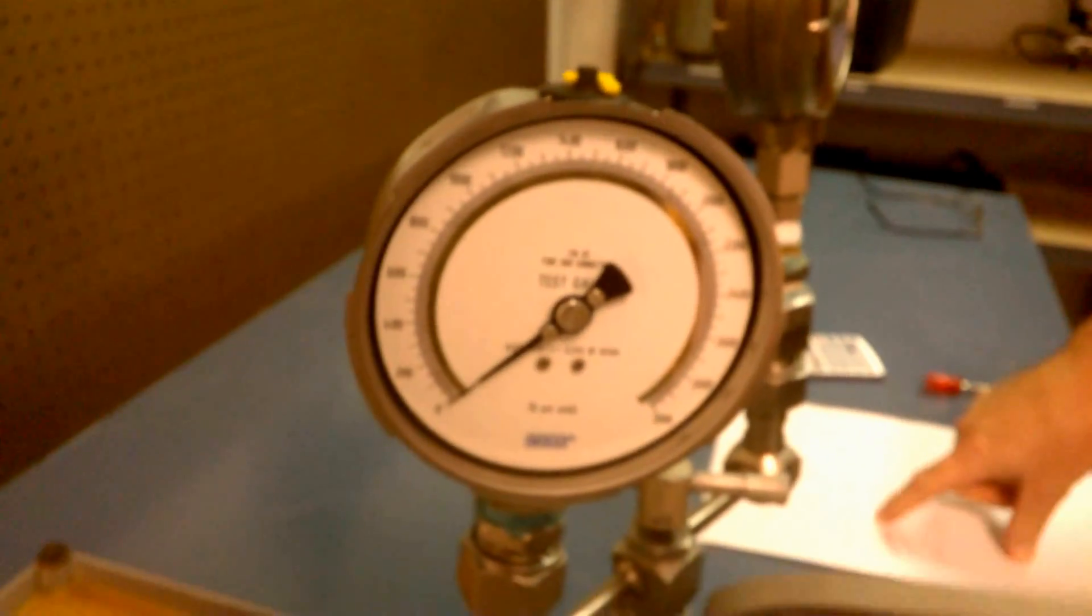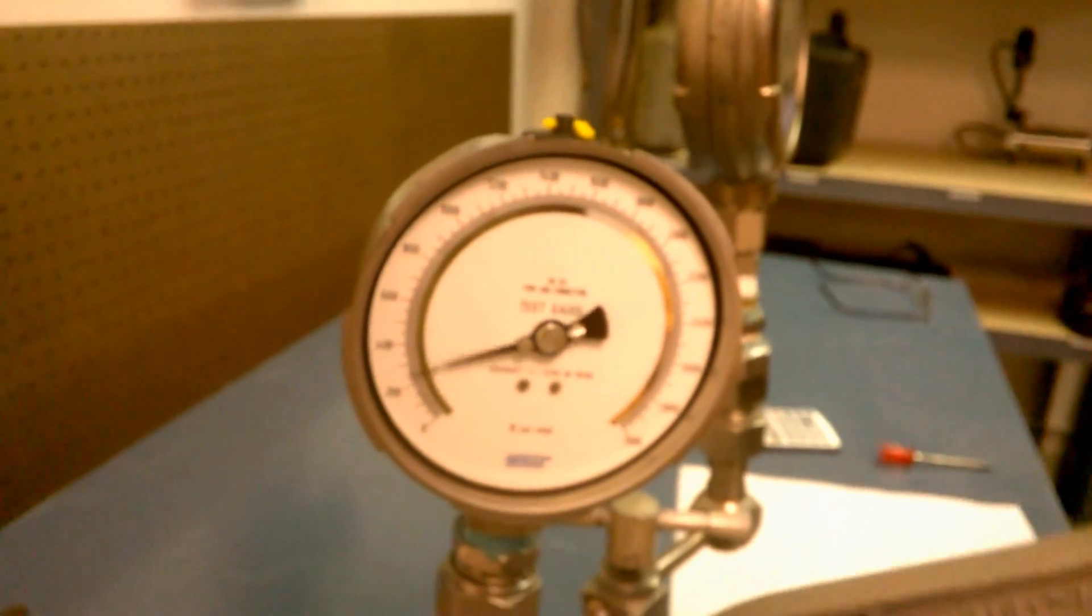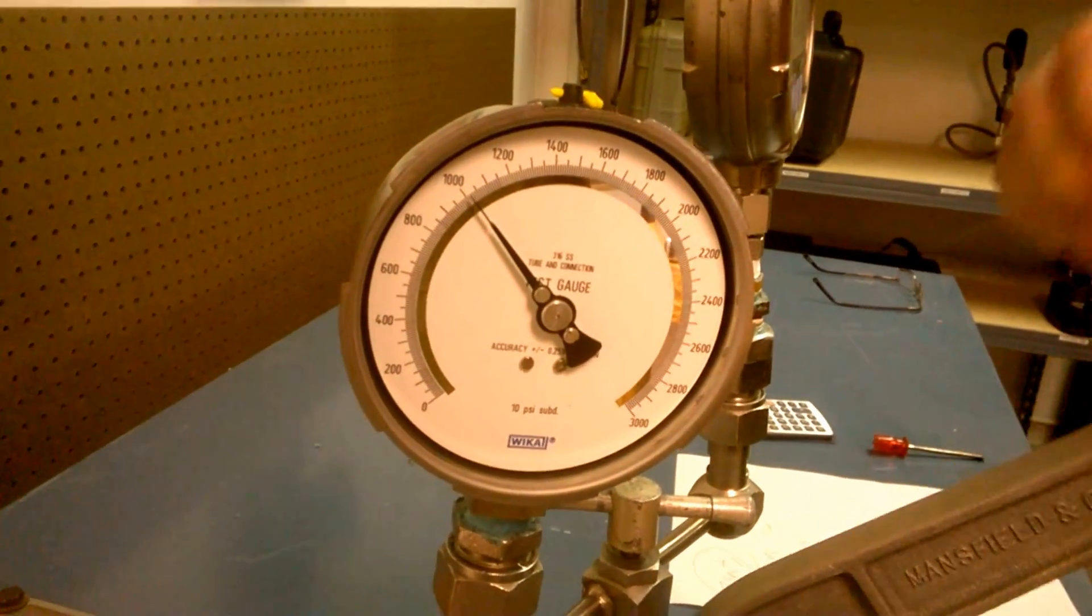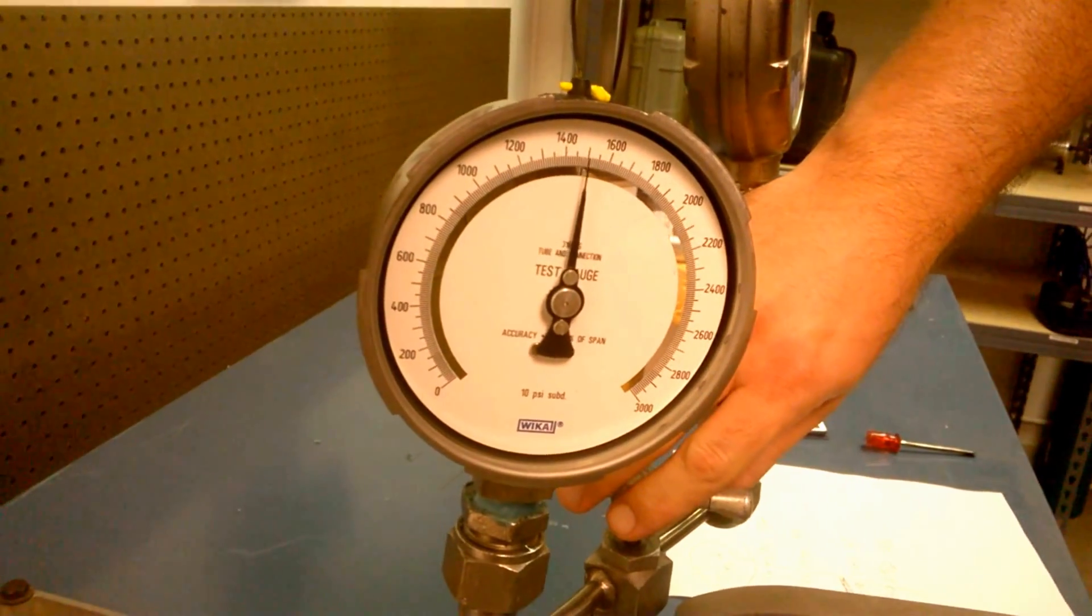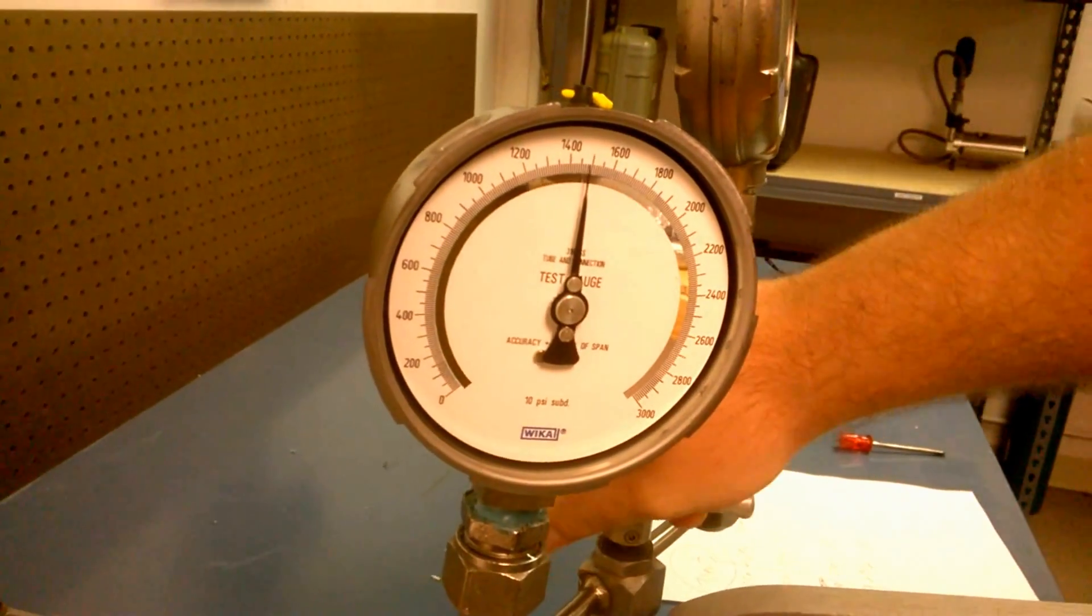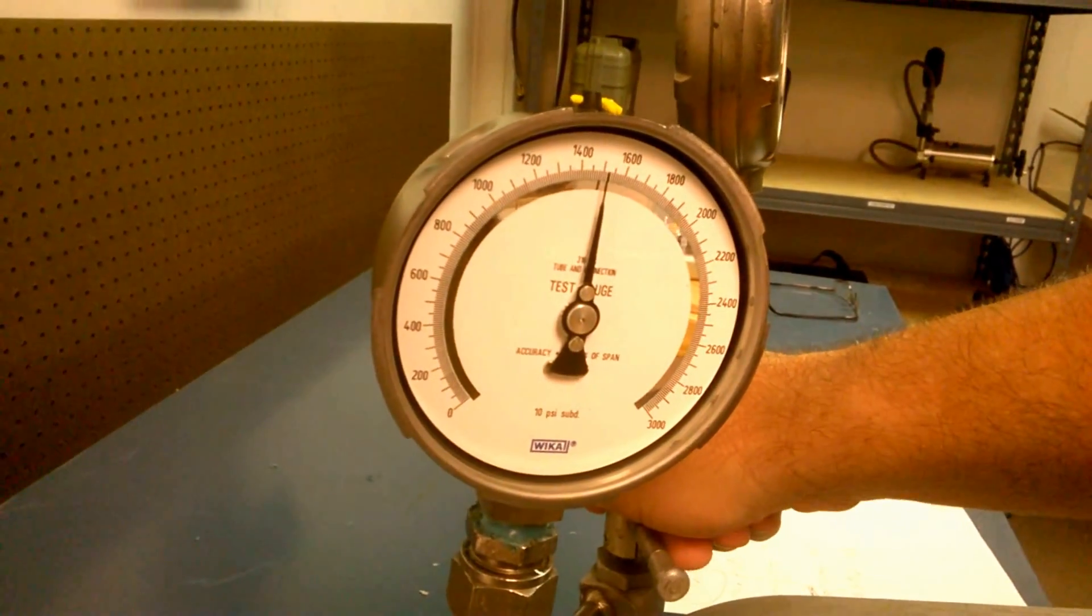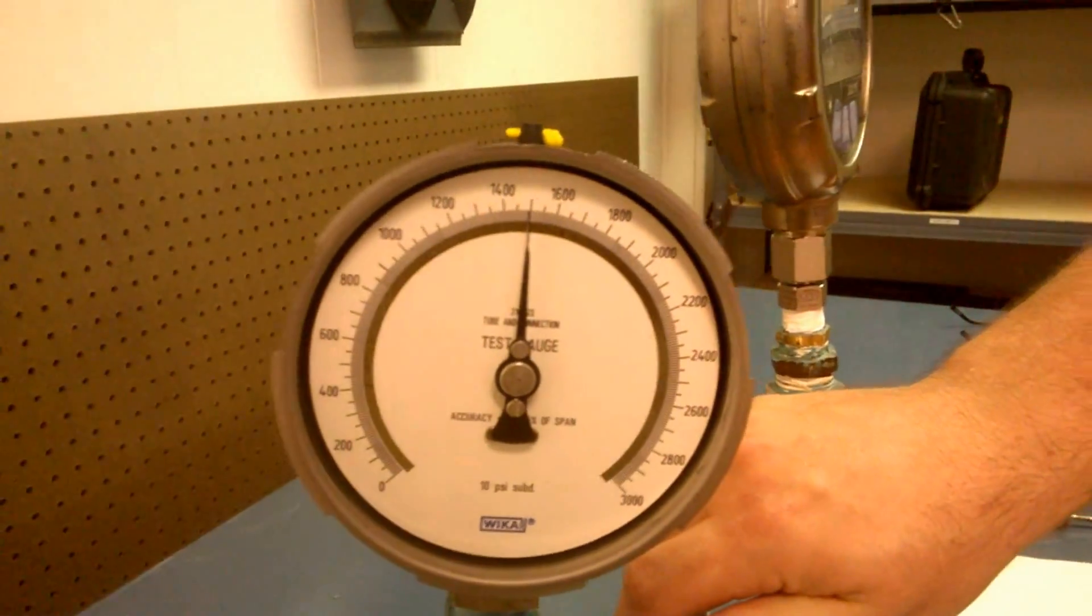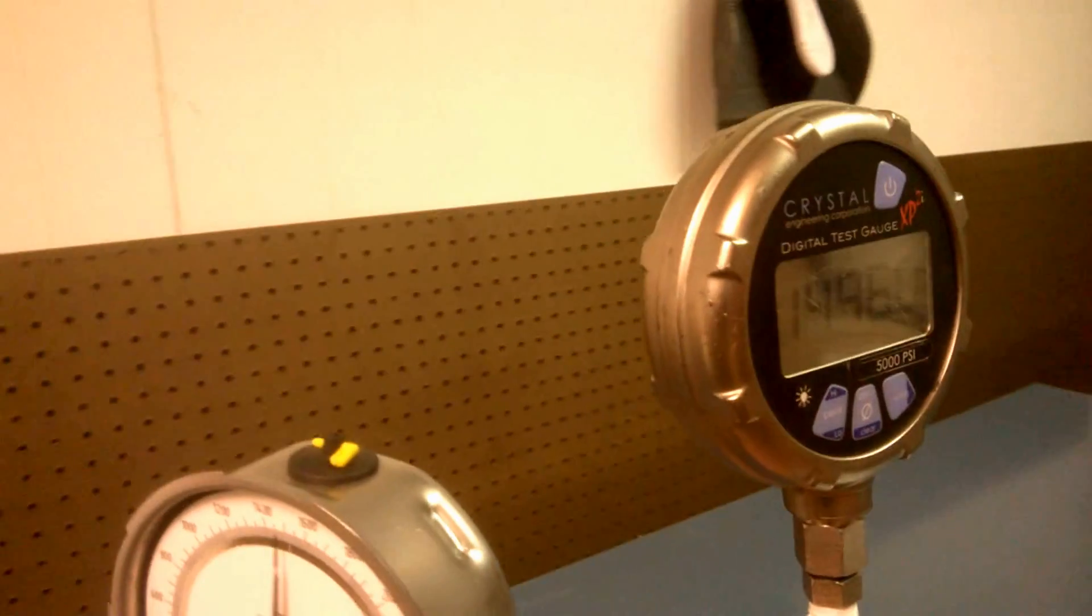So, let's go to 1,500, nice easy number. We were at 1,457 the first run. Right about there. So, over here, 1,490.